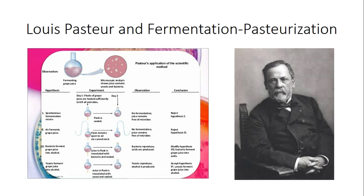When Pasteur studied the beverages, he found that it wasn't air but yeast — single-celled eukaryotic microbes — that were responsible for converting the fruits into alcohol. The yeast would take sugar and convert it into alcohol in a process known as fermentation. This process is anaerobic — you don't want oxygen or air to get in. In the presence of air, bacteria could get in and convert the alcohols into acetic acid, or vinegar, making it very sour.